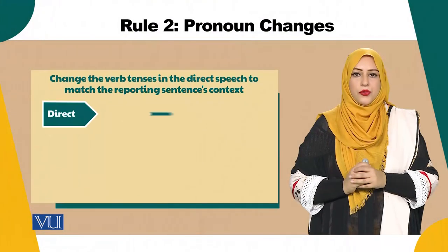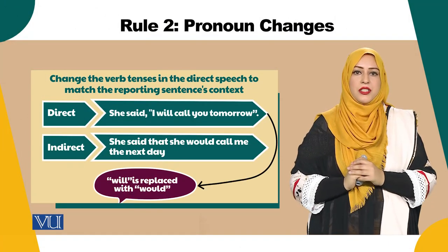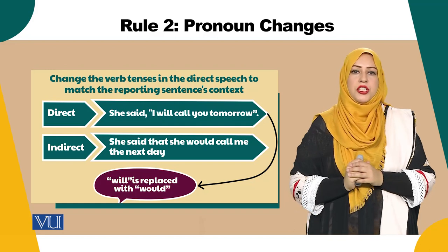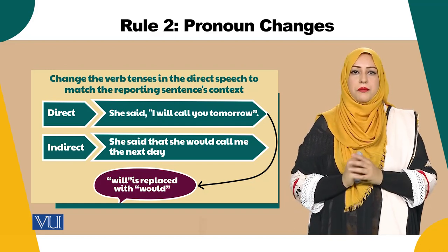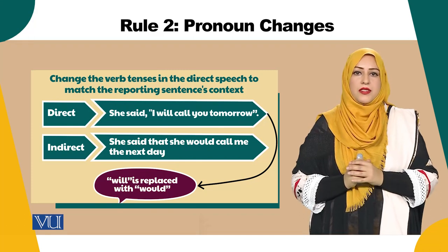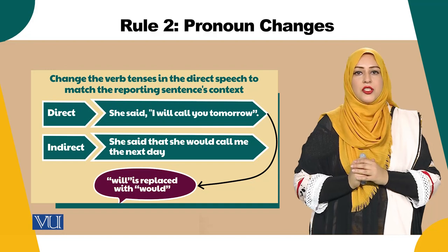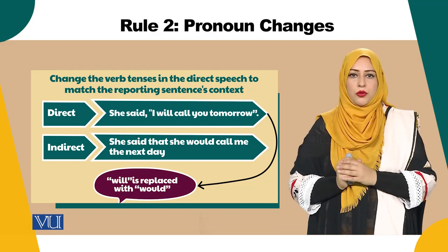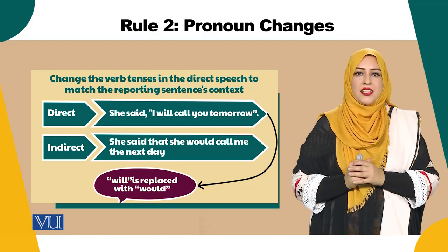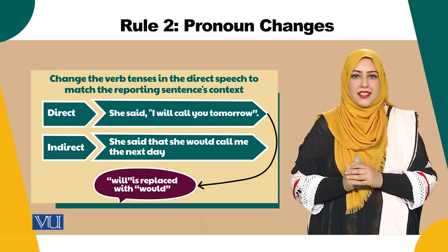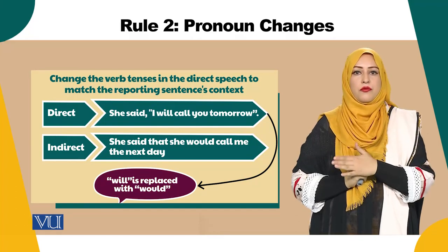The second rule of conversion is the verb tense change. When you are converting a direct speech to an indirect speech, you need to change the verb tense in order to fit the context of the reporting speech. For example, the sentence 'She said she will call me tomorrow' when converted into indirect speech becomes 'She said she would call me next day.' As you can see, 'will' is replaced with 'would.'